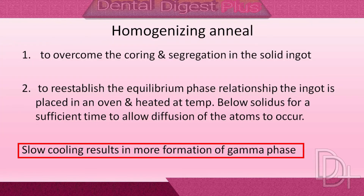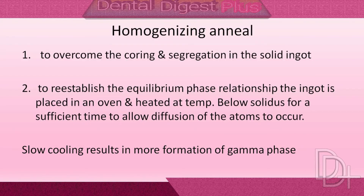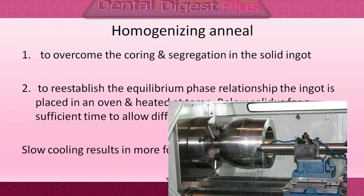On the other hand, if the ingot is permitted to cool very slowly, the proportions of phases continue to adjust toward the room-temperature equilibrium ratio. To produce lathe-cut powder, an annealed ingot of alloy is placed in a milling machine or lathe and fed into a cutting tool.